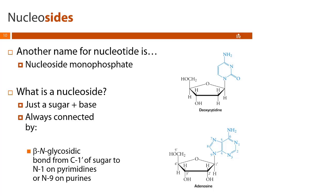The anomeric carbon is one-prime, then two-prime, three-prime, four-prime, and the carbon attached to our primary alcohol is five-prime. For completeness, the cytosine residue is numbered as well.